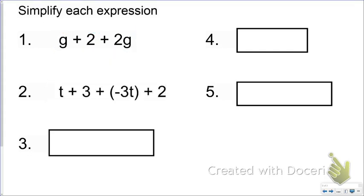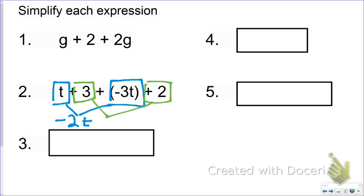Go ahead and do number 2. The like terms I see are T and negative 3T, and 3 and 2. What's T minus 3T? That's going to be negative 2T. And what's 3 and 2? That's going to be positive 5. So my simplified expression is negative 2T plus 5.